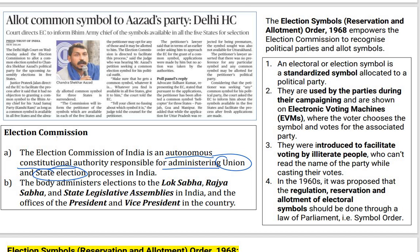Election symbols help those who are illiterate to recognize which party they are voting for — they identify the party through the symbol. These symbols are also used by parties for their campaigning. Sometimes the name of a party is very difficult to remember or pronounce, so the symbols come in handy — for example, the AAP party has the jhadu, and there is also the kamal and the hand symbol. These symbols are drawn on EVMs, and even literate voters identify parties by their election symbols.